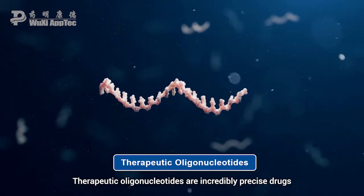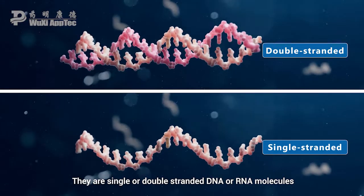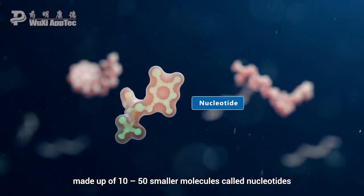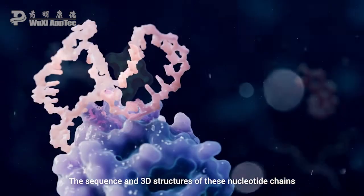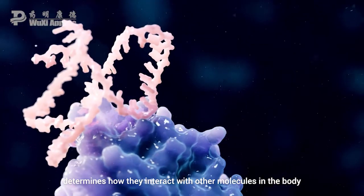Therapeutic oligonucleotides are incredibly precise drugs. They are single or double-stranded DNA or RNA molecules made up of 10 to 50 smaller molecules called nucleotides. The sequence and 3D structures of these nucleotide chains determines how they interact with other molecules in the body.